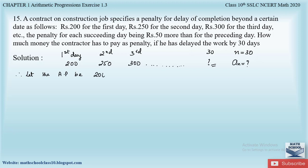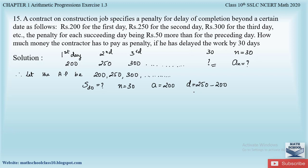Therefore, let the AP be: 200 for the first day, 250 for the second day, 300 for the third day, and so on. We have to find the sum for n = 30 terms. From the AP, the first term a = 200, and the common difference d = a2 − a1 = 250 − 200 = 50.